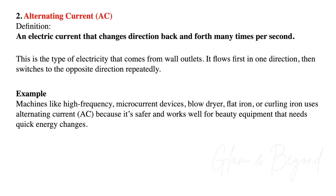Number two, alternating current. An electric current that changes direction back and forth many times per second — that would be alternating current. This is the type of electricity that comes from wall outlets. It flows first in one direction, then switches to the opposite direction repeatedly. Machines like high frequency, microcurrent devices, blow dryers, flat irons, or curling irons use alternating current because it's safer and works well for beauty equipment that needs quick energy changes.